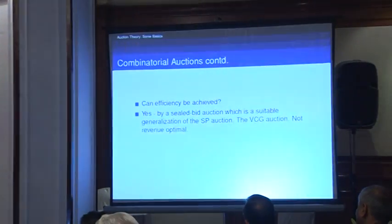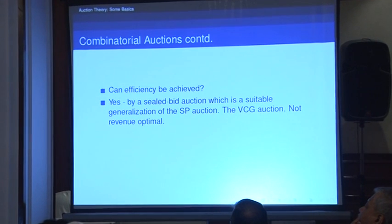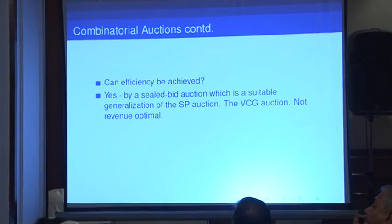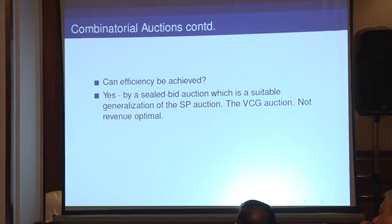This makes it a very hard question, inducing all kinds of very complex strategic behavior. If you can't do revenue optimization, can you do efficiency — assigning packages to maximize the sum of valuations? Yes, you can, by a sealed-bid auction which is a generalization of the second price auction. This is called the VCG auction — the Vickrey-Clarke-Groves auction. It's not revenue optimal, but it is efficient.